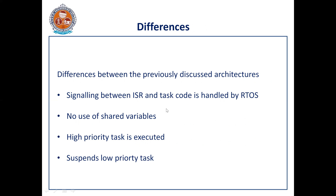The differences with previously discussed architectures: signaling between the ISR and the task code is handled by the RTOS — this is an important advantage. No use of shared variables is needed. High-priority tasks are executed first, and low-priority tasks can be suspended. These are the differences with the other architectures.